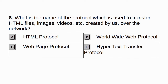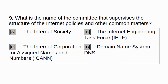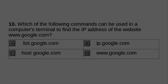What is the name of the protocol which is used to transfer HTML files, images, videos, etc. created by us over the network? A. HTML protocol. B. World Wide Web Protocol. C. Web Page Protocol. D. Hyper Text Transfer Protocol. Answer: D. Hyper Text Transfer Protocol. What is the name of the committee that supervises the structure of the internet policies and other common matters? A. The Internet Society. B. The Internet Engineering Task Force. C. The Internet Corporation for Assigned Names and Numbers. D. Domain Name System. Answer: A. The Internet Society.